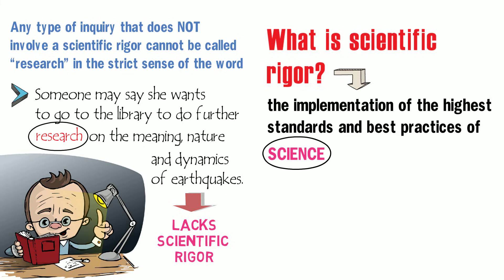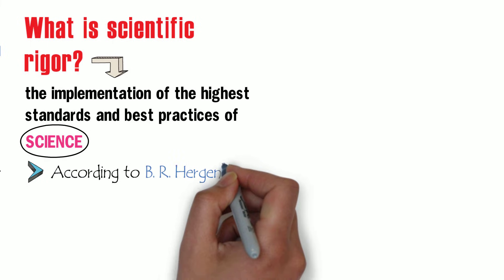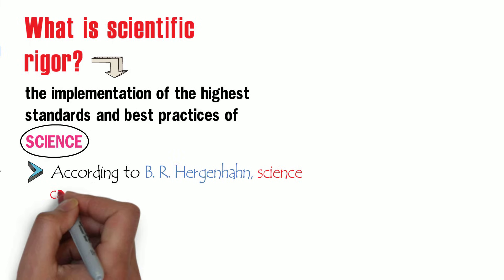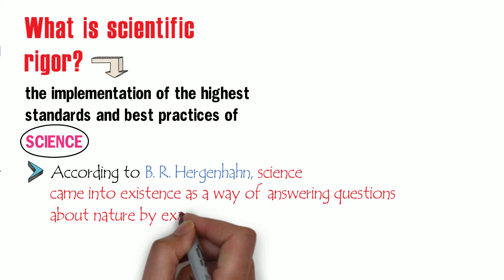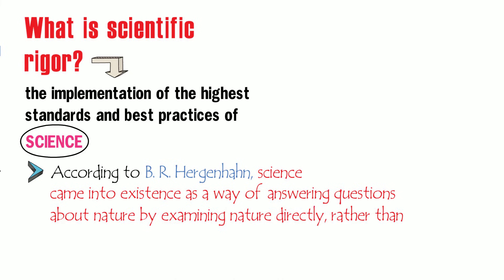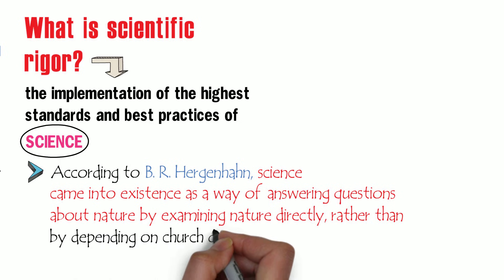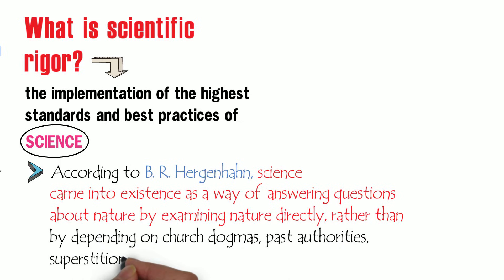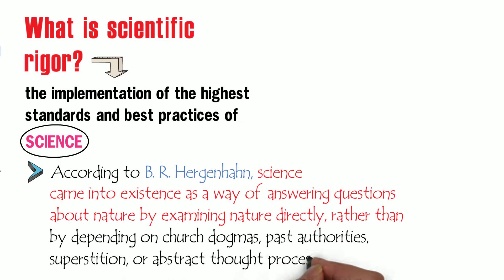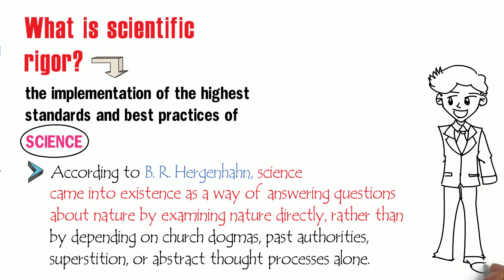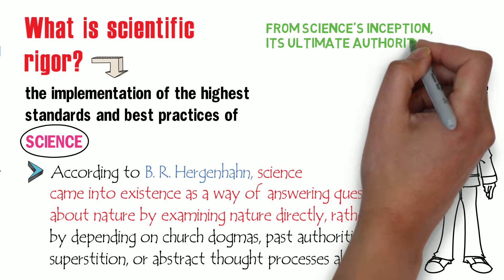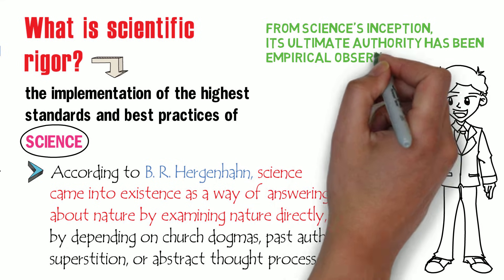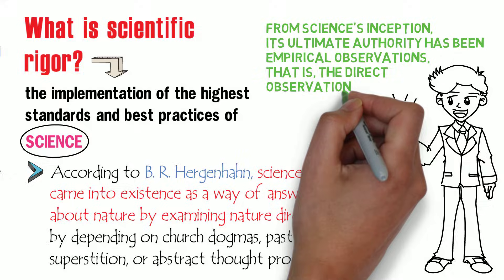But what is science in the first place? Historically, according to B. R. Herjohan, science came into existence as a way of answering questions about nature by examining nature directly, rather than by depending on church dogmas, past authorities, superstition, or abstract thought processes alone. For Herjohan, from science's inception, its ultimate authority has been empirical observations — that is, the direct observation of nature.